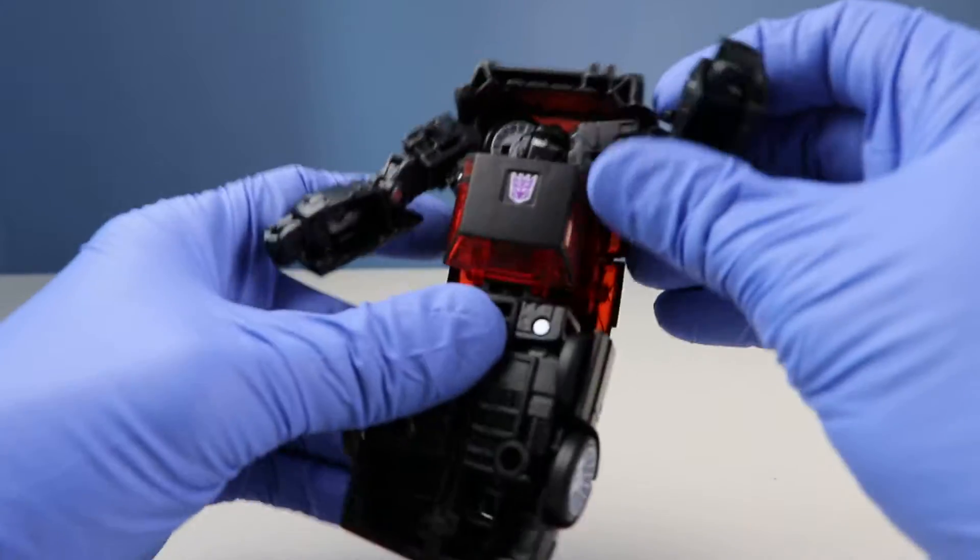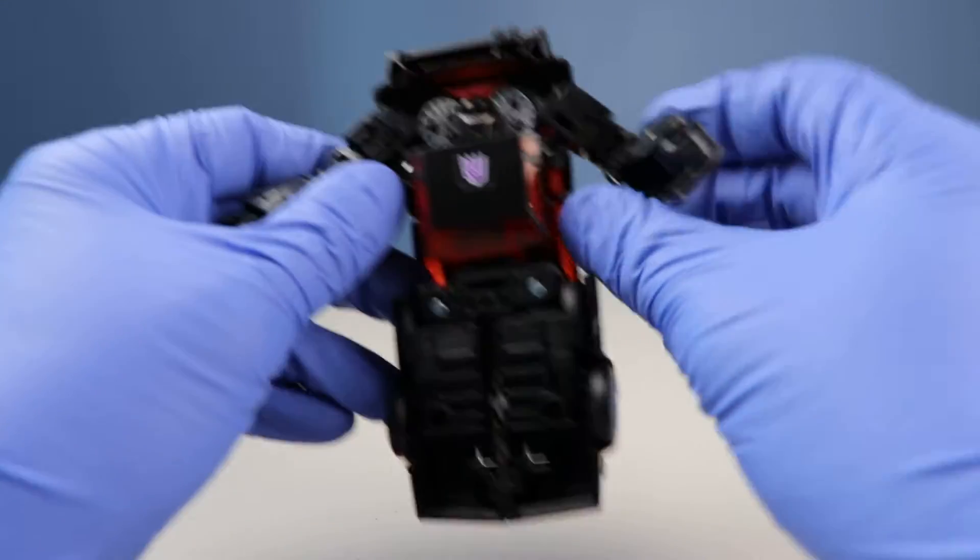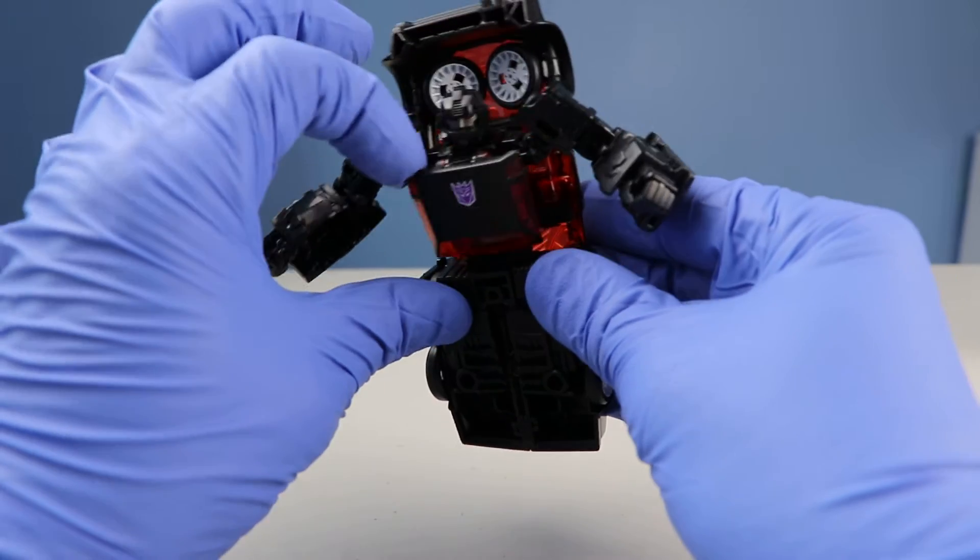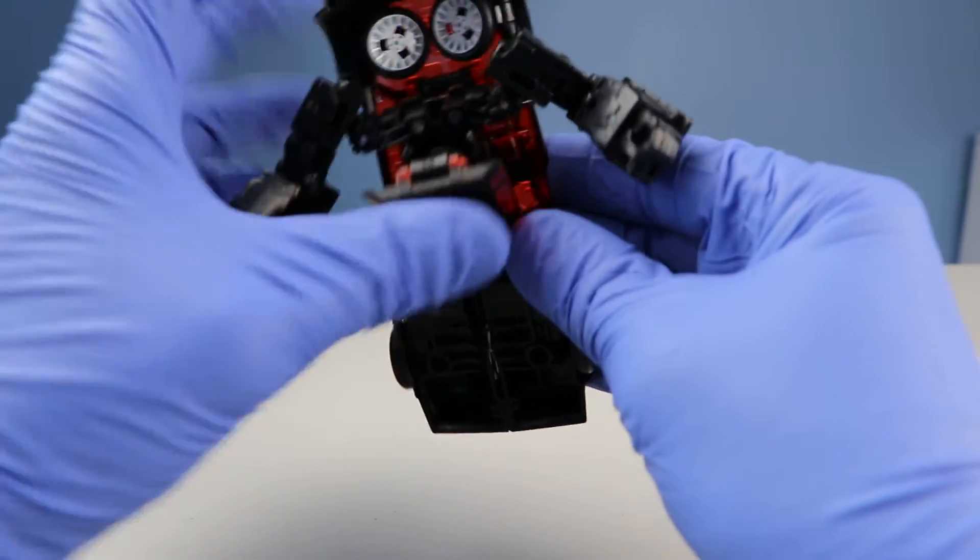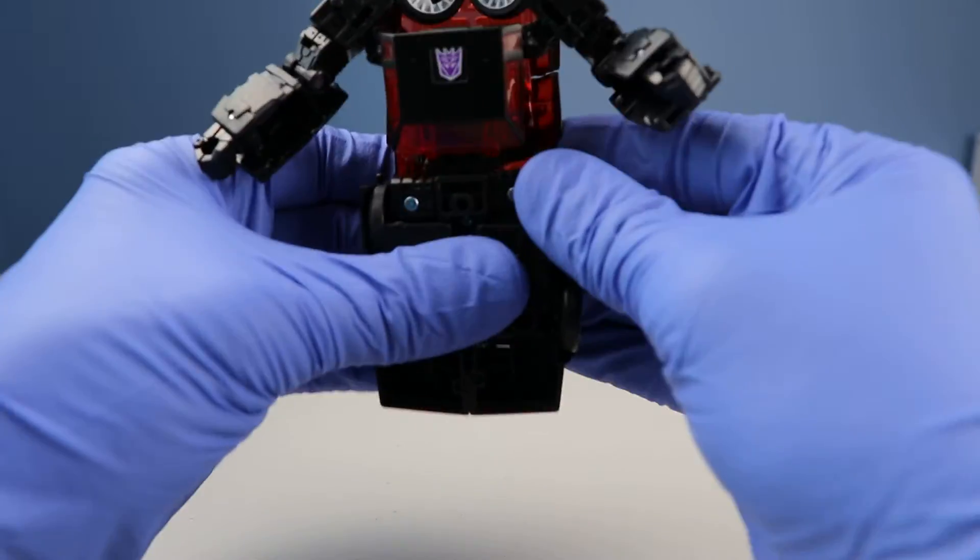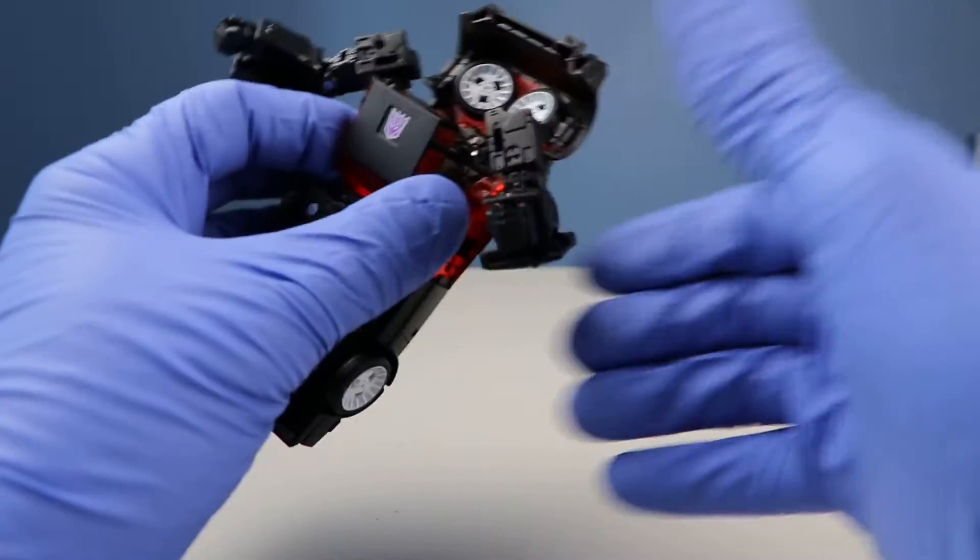So this windshield here is actually fake. It's at the bottom of the car. So push it forward, flip in the head and close it. And let's just move this out of the way.